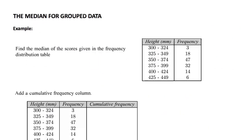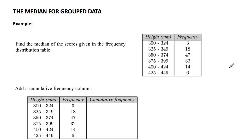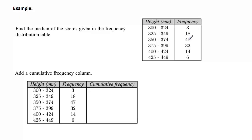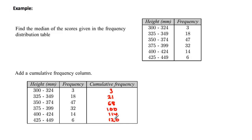Let's look at working out the median when we've got grouped data. Here's our group data and frequency. We accumulate the frequency: 3 scores to the first group, 3 plus 18 gives 21, 21 plus 47 gives 68, 68 plus 32 gives 100, 100 plus 14 gives 114, and 114 plus 6 gives 120 scores altogether. So there are 120 scores in total. Where is our median?